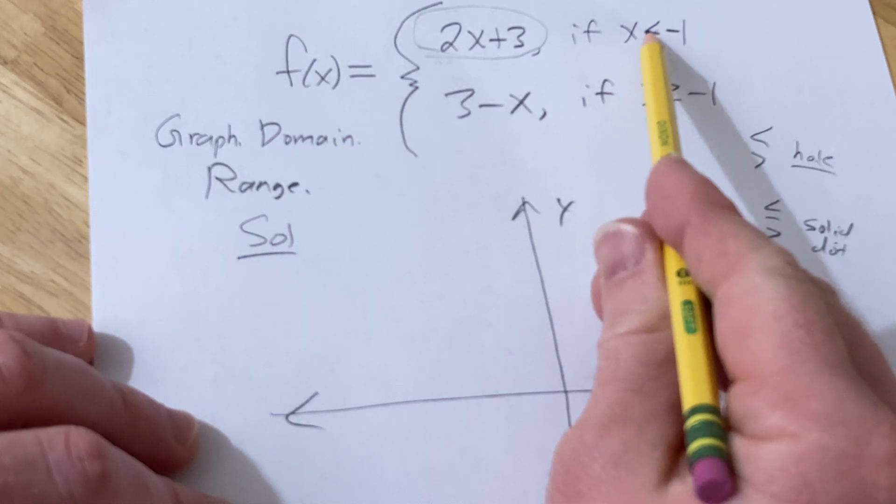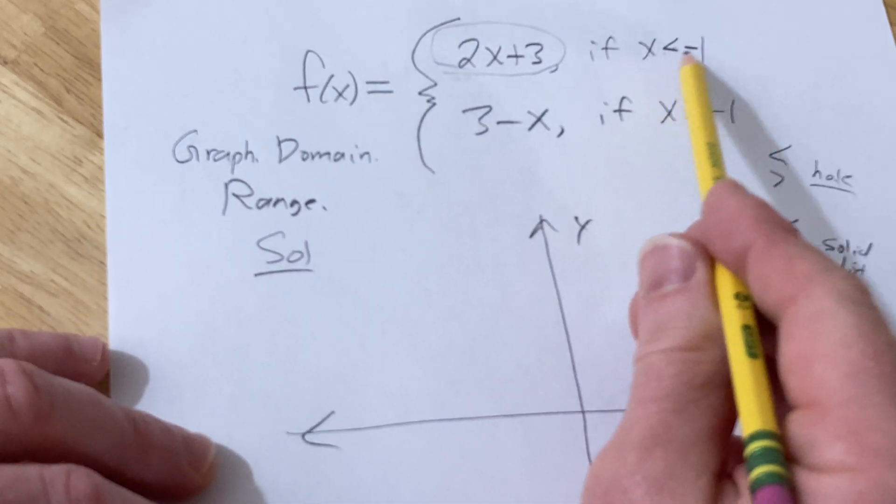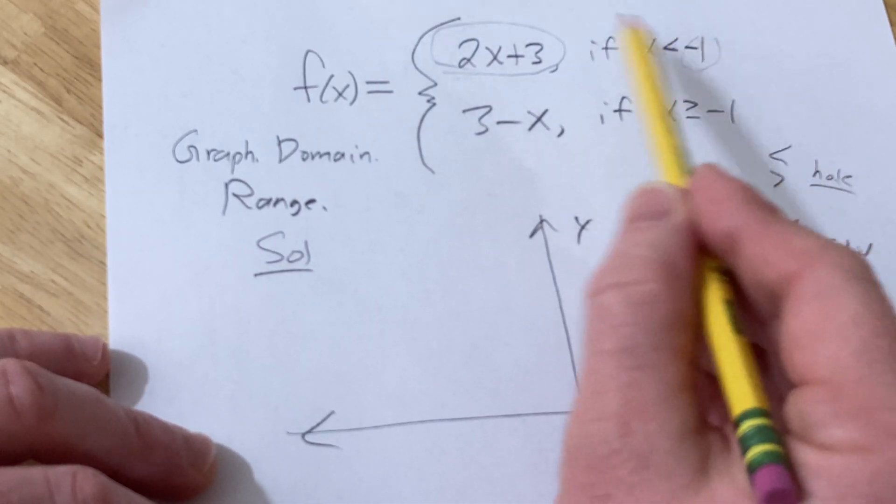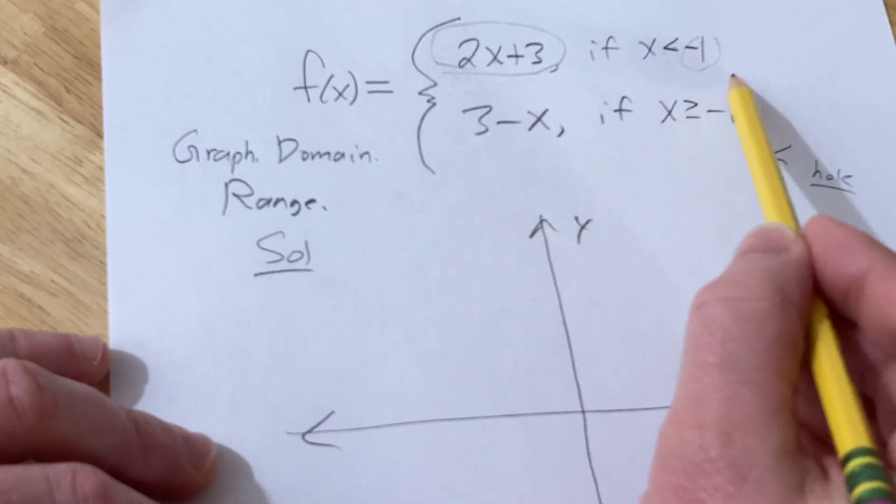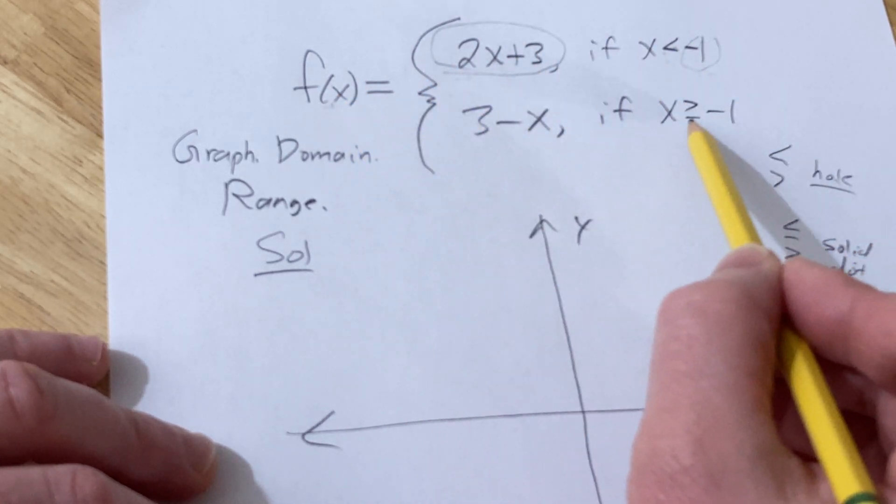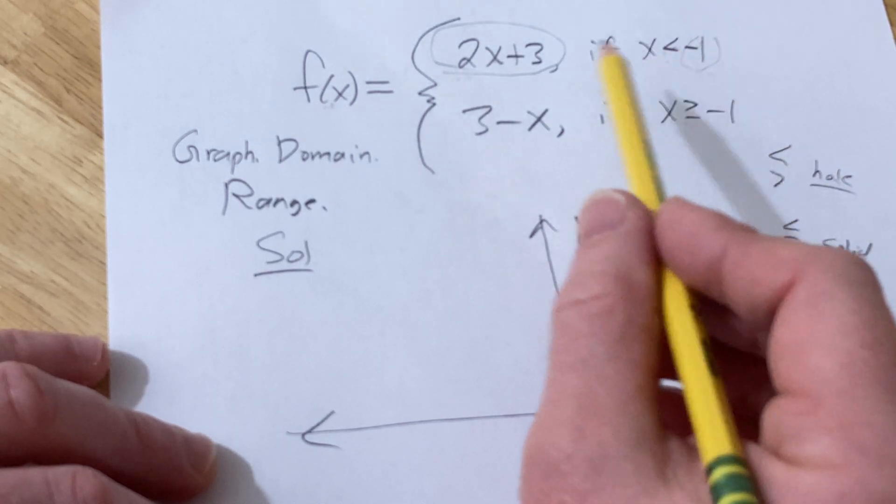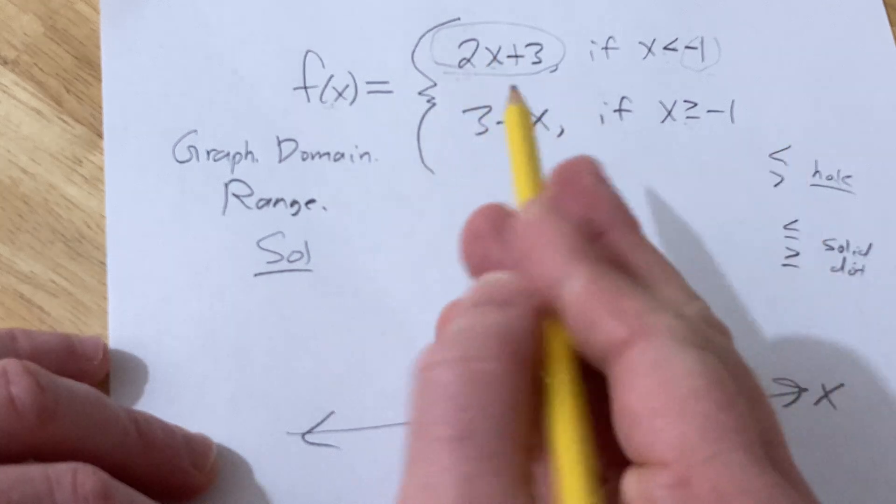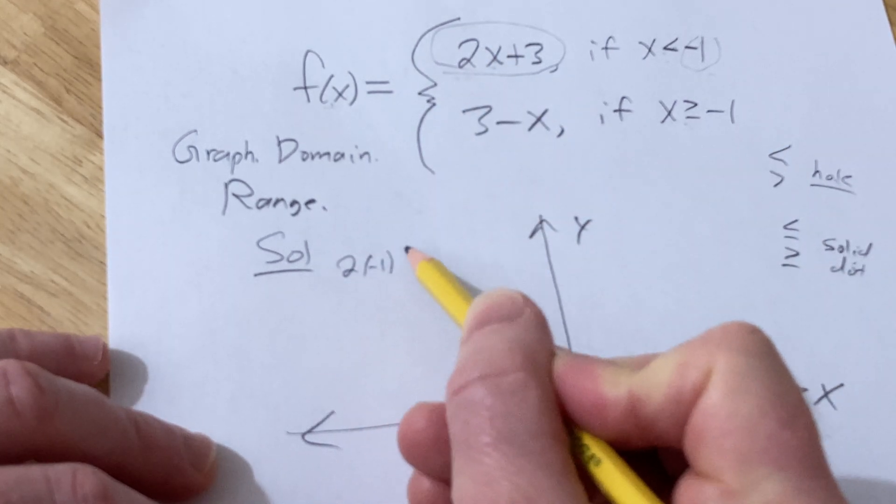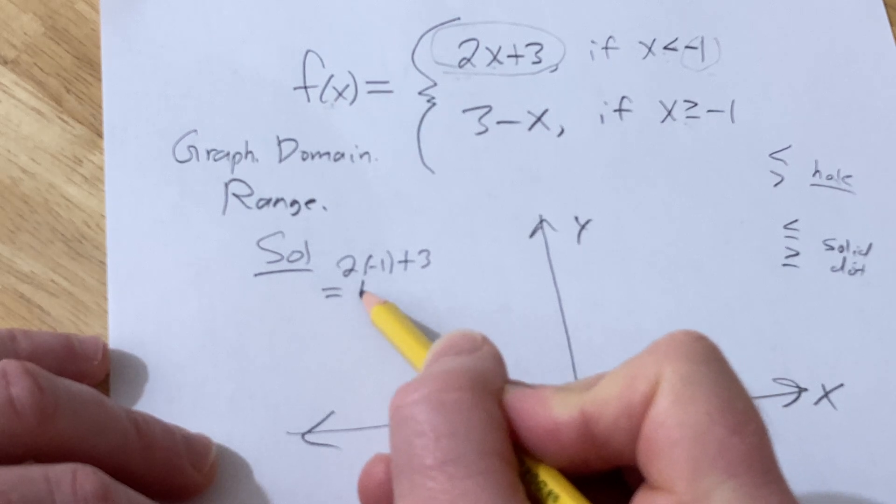So we're going to have a hole here, and so to find the y-value of the hole, you basically take this negative 1 and you put it here where the x is. Now you're not supposed to do that, right? When you plug in negative 1 to the function, you're supposed to look here. But we're just breaking the rules just to find the hole. So I'm going to put the negative 1 here. It's going to be negative 2 plus 3 is 1.